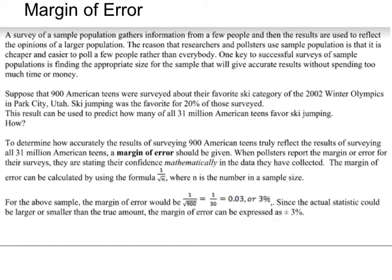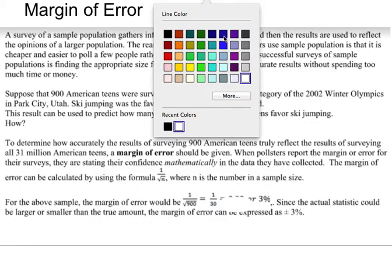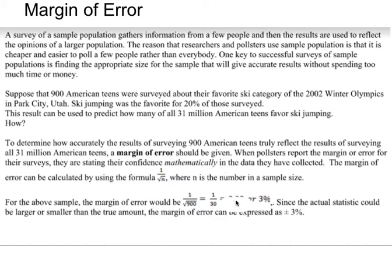For the example above, the margin of error is 1 divided by the square root of 900, because there were 900 people in the sample. The square root of 900 is 30, so 1 divided by 30 gives 0.03. That is written as a decimal, so you have to convert it to a percent. To change a decimal to a percent, move the decimal two spaces to the right — we talked about this in other units.